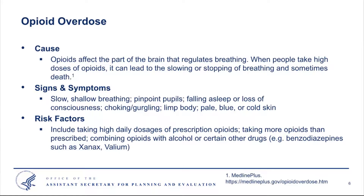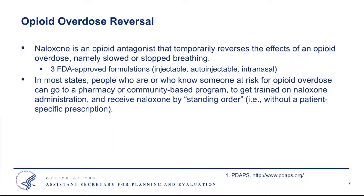How do we treat overdoses? Many folks may be aware of a drug known as naloxone. Naloxone is the opioid antagonist that temporarily reverses the effects of an overdose — the life-saving drug familiar to many. There are three FDA-approved formulations of naloxone: an injectable vial, an auto-injector similar to an EpiPen, and an intranasal formulation.